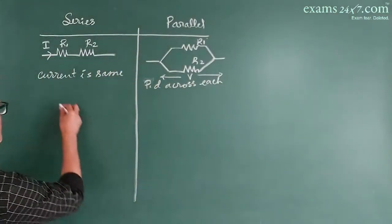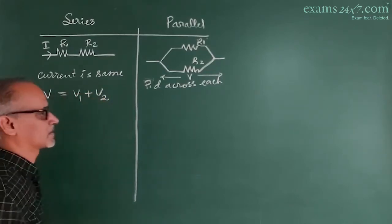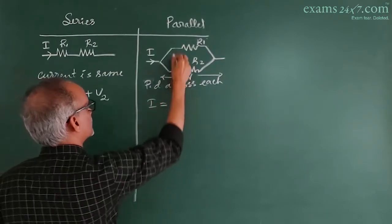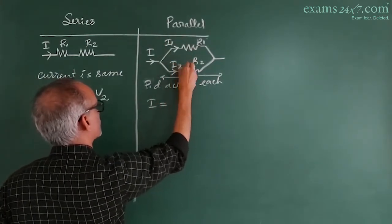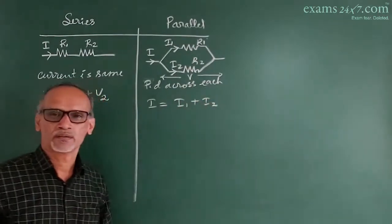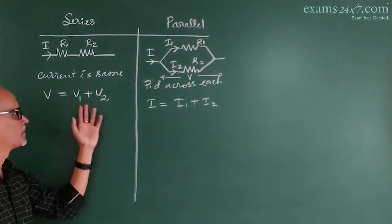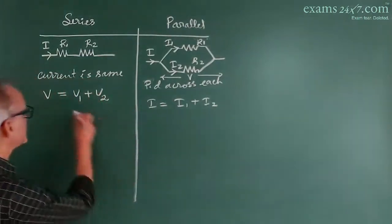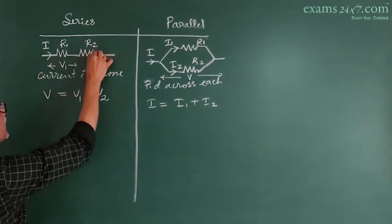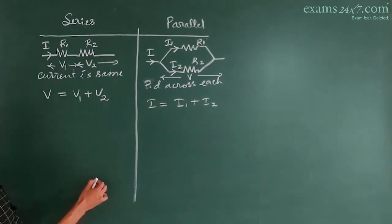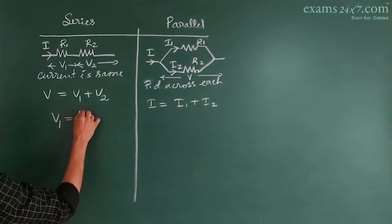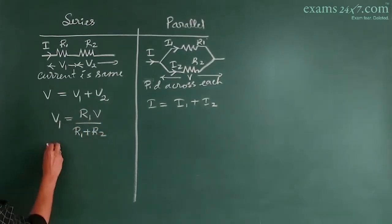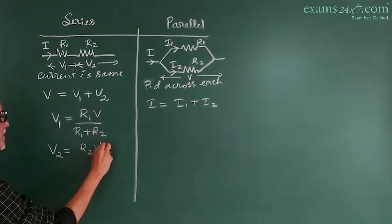In series combination, the potential difference across the combination equals the sum of potential differences across each resistor. In parallel combination, the main current I equals the sum of branch currents I1 plus I2. For more branches, V equals V1 plus V2 plus V3 and so on. For two resistors in series, V1 equals R1 times V divided by R1 plus R2, and V2 equals R2 times V divided by R1 plus R2.